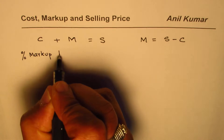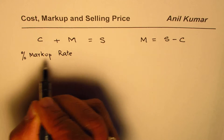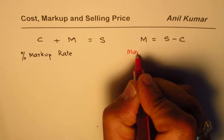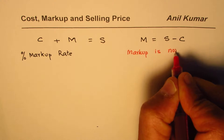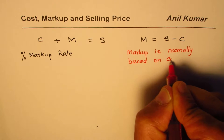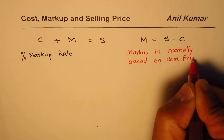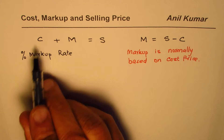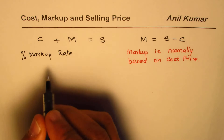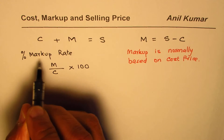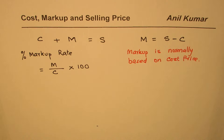At times we may be interested to find the percent markup rate. Markup is normally based on cost price — remember that. So if it is not defined in the question, you have to assume that markup is based on cost price. Therefore, the markup rate will be the amount marked up (M) divided by the cost price, times 100, giving you the percent markup rate.